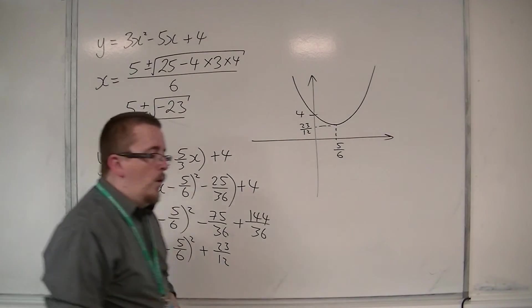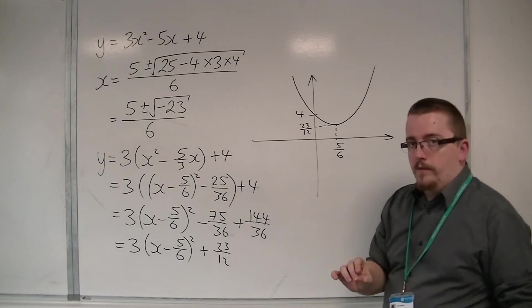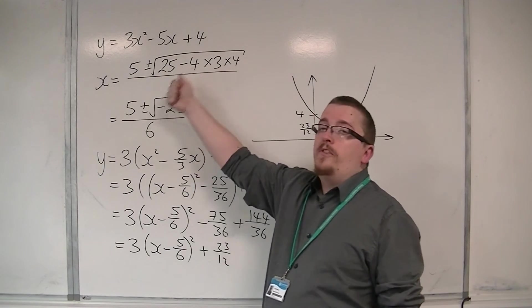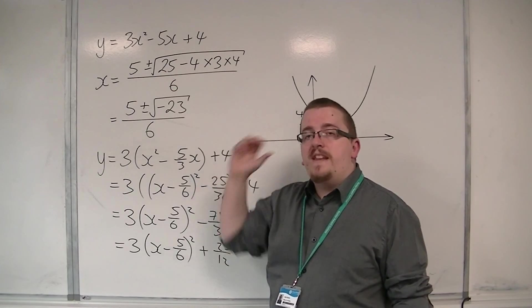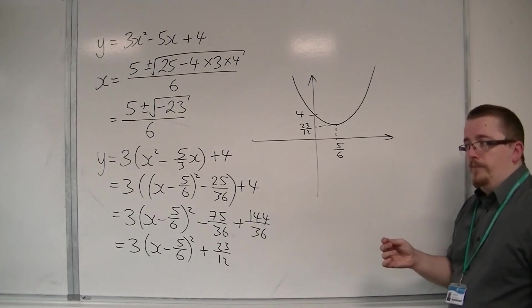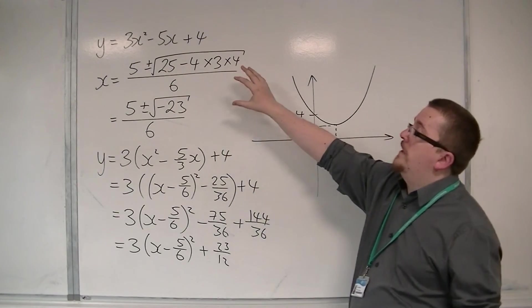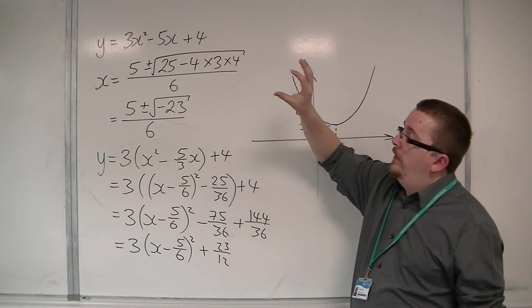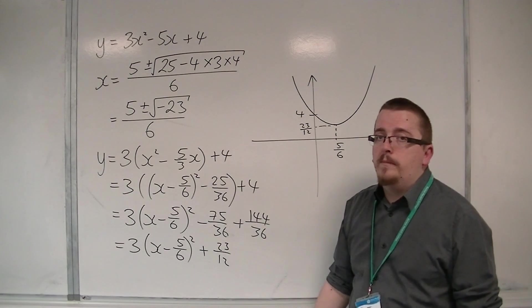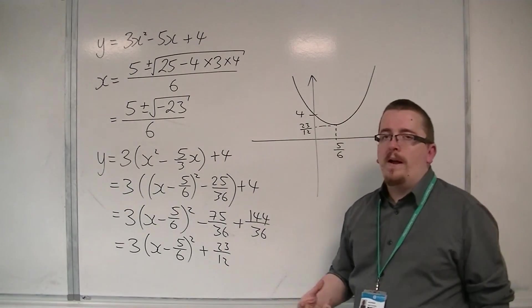So what we need to learn from this is that the quadratic formula failed because the value underneath the square root symbol was negative, and that meant that there were no real roots. And what we're going to find is that in the next set of videos, this piece underneath the square root sign of the quadratic formula has its own name and will give us that much more information about the quadratic curves.